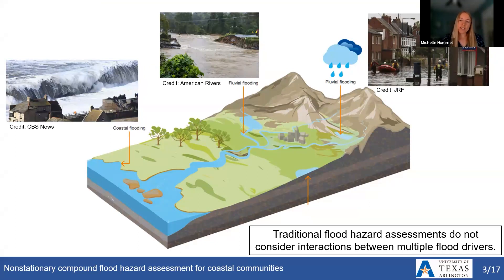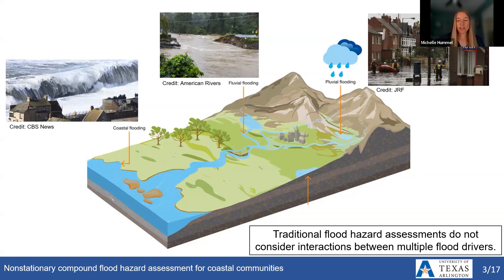There is a potential for flood-induced impacts within these communities and potential disruptions to infrastructure. For communities facing flood hazards, we're thinking particularly about those located in bays and estuaries where rivers meet the coast, and thus there are multiple potential sources of flooding. We typically classify those into coastal flooding, fluvial flooding, and pluvial flooding. Coastal flooding results from high tides, wind-driven storm surge, or waves that impact the shoreline.